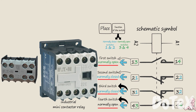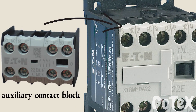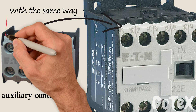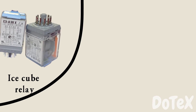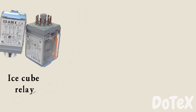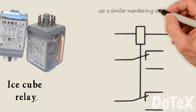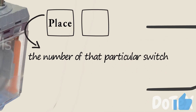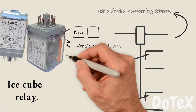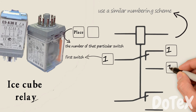Any auxiliary contact blocks added to this relay would continue this scheme in the same way, starting at five for the first digit. Let's jump to the ice cube relay. Ice cube relays with single pole double throw switches use a similar numbering scheme — the first digit is given the number of that particular switch. This is the first switch connected with this relay, so the first digit would be one for these terminals.